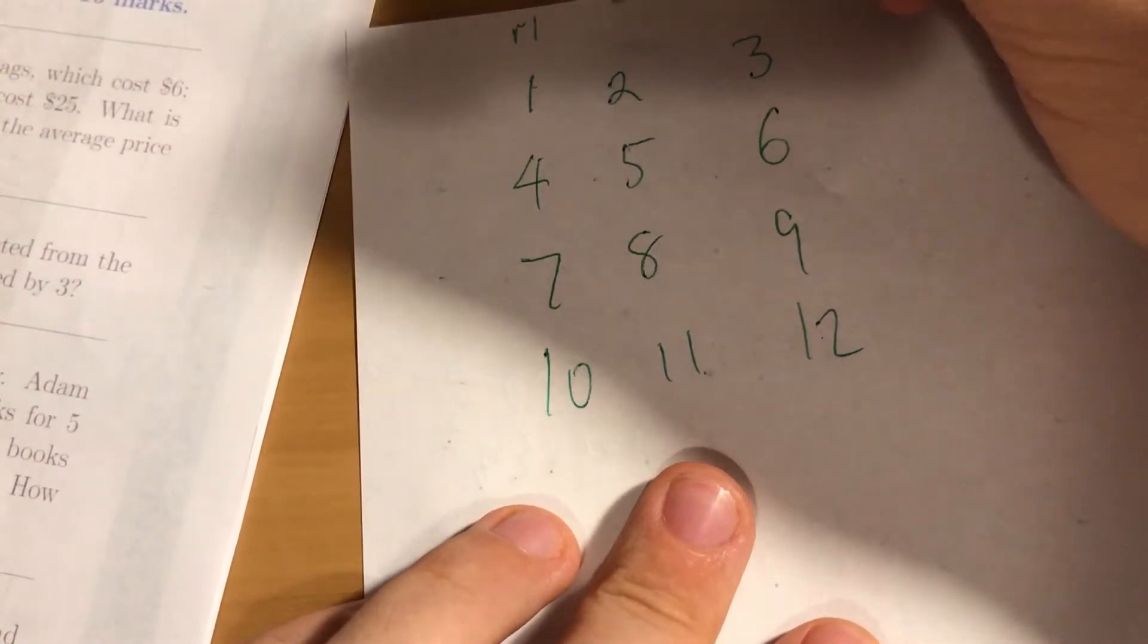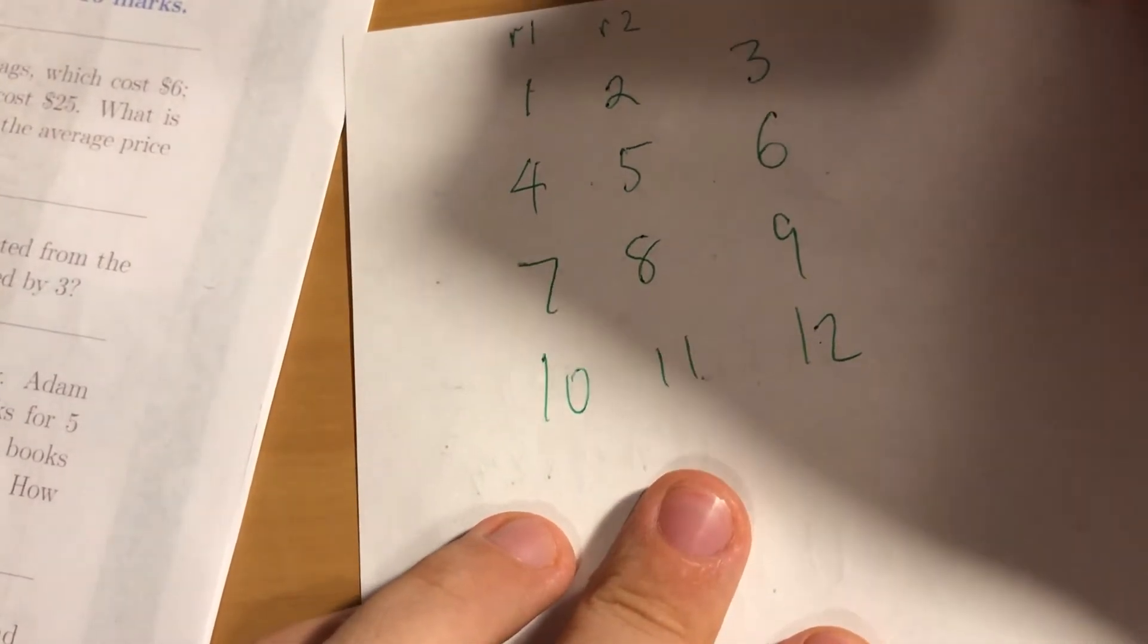So these all have remainders 1, remainder 2, and this is remainder 3 or 0, okay?